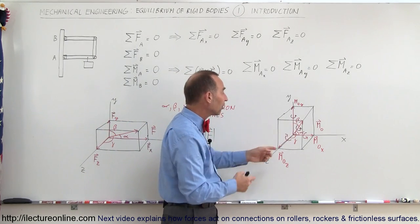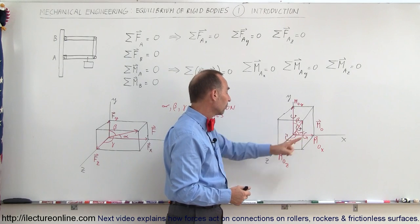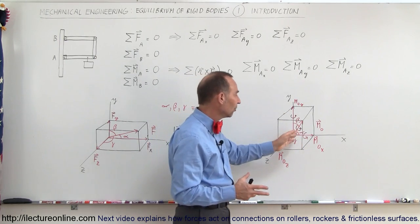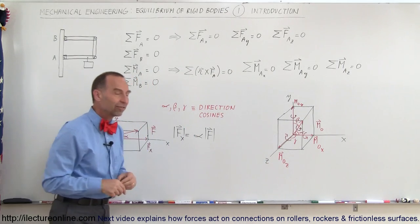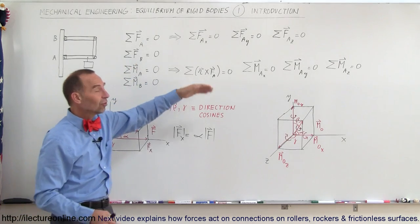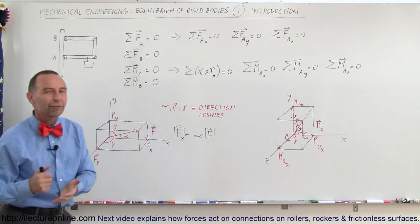And of course, we do the same for the moments. If we're given a moment in any direction, we can find the x component, the y component, and the z component of the moment again by taking the moment and multiplying it by the direction cosines to get the individual components. Then we can use these equations, add them all up, and then typically solve for the unknowns.